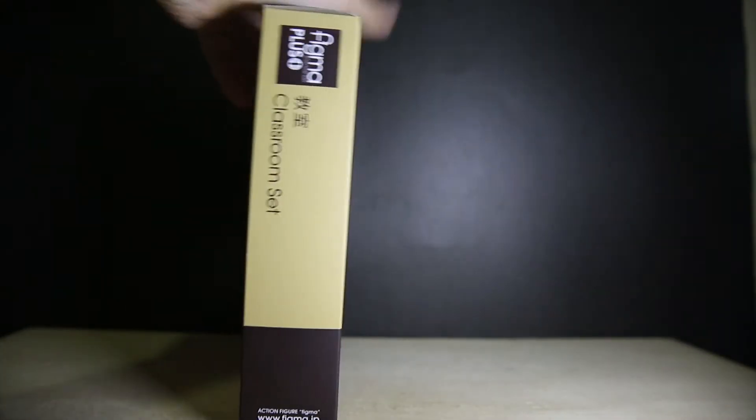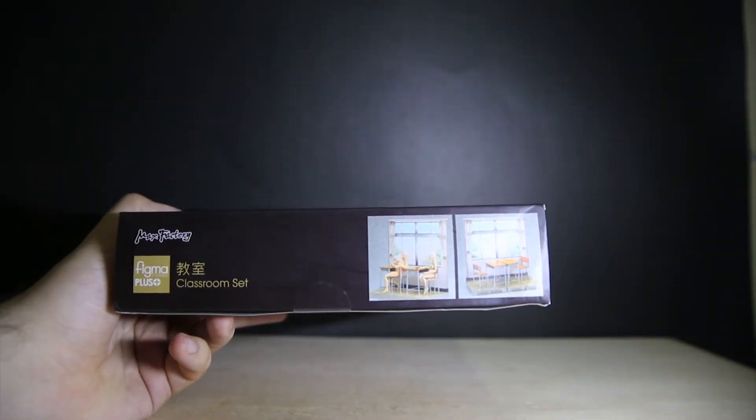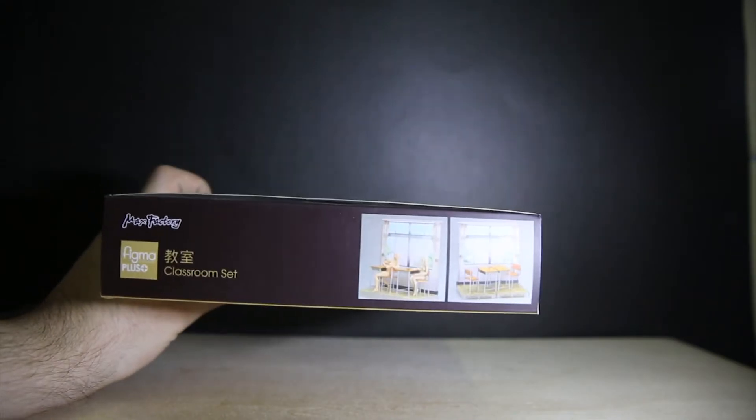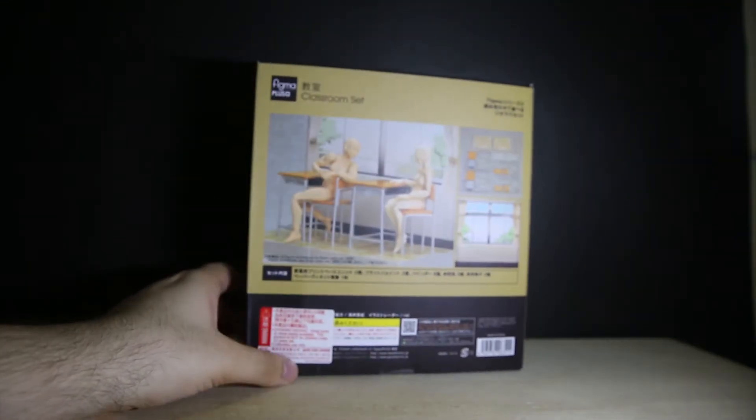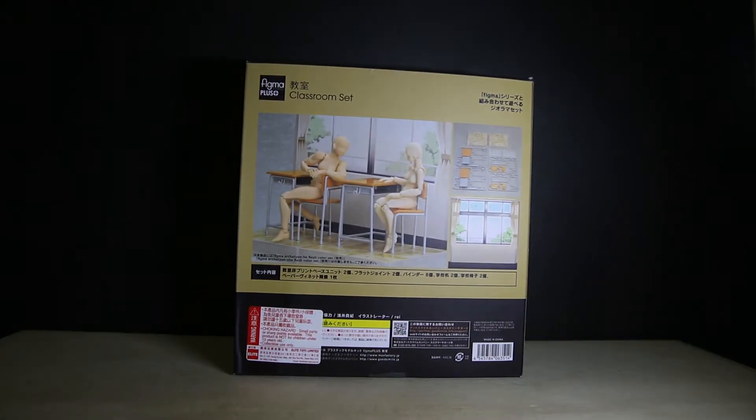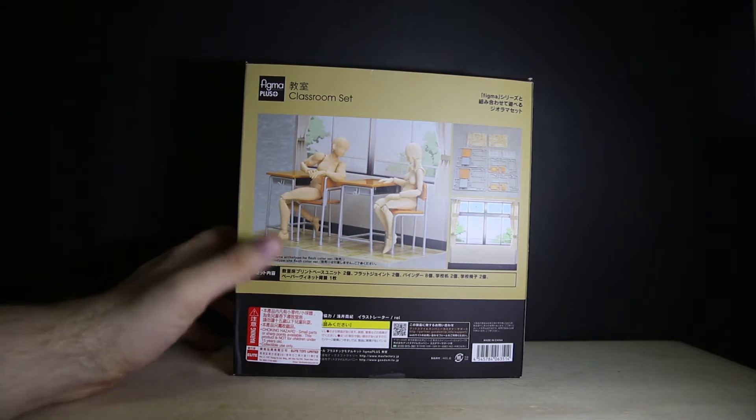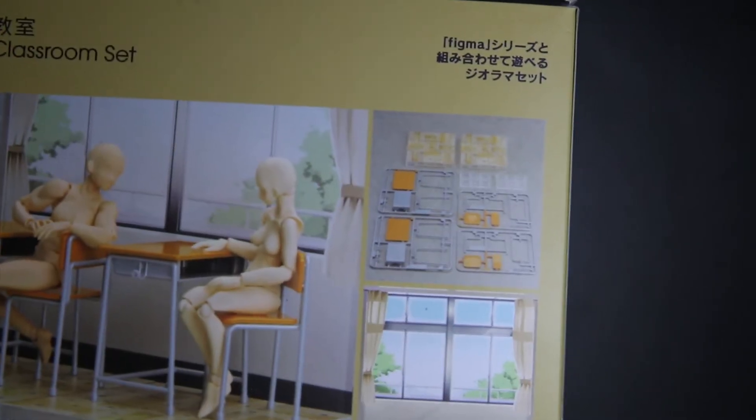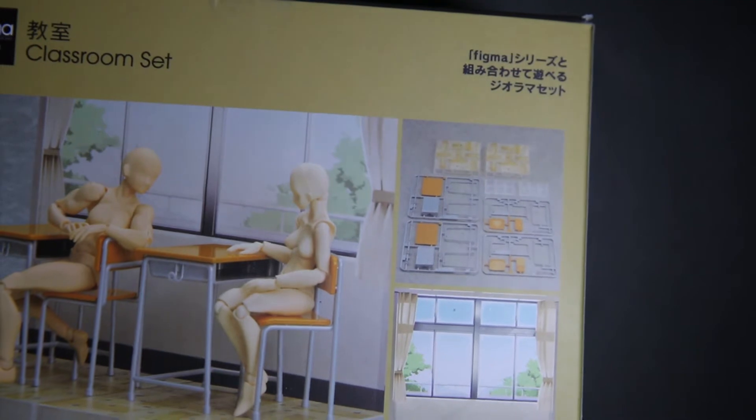Not much to see on both sides of the box - it says classroom at the bottom with just a few images of their flesh skin. They have male and female body type figures - male archetype figures that they released at some point. The back of the box shows you exactly what you get inside with the pieces to build the whole set.